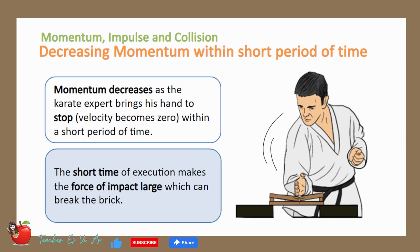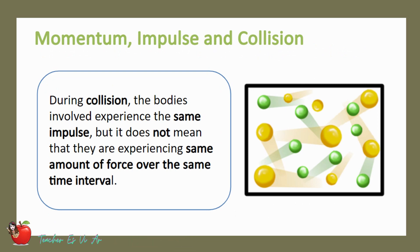Our next example is the collision of a brick and a hand. Let us analyze how a karate expert can break a brick with just bare hands. Momentum decreases as the karate expert brings his hand to stop within a short period of time. This short time of execution makes the force of impact large, which can break the brick. From those situations, we can see that the bodies involved experience the same impulse during a collision. Still, it doesn't mean that they are experiencing the same amount of force over the same time interval.